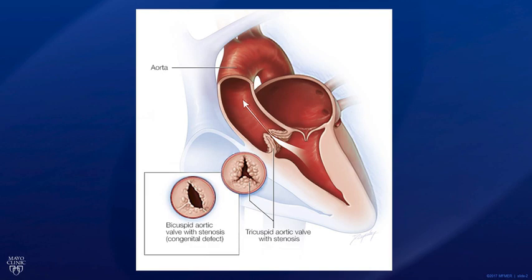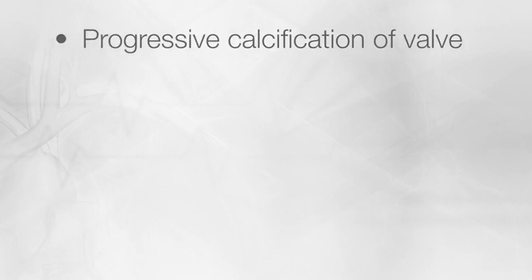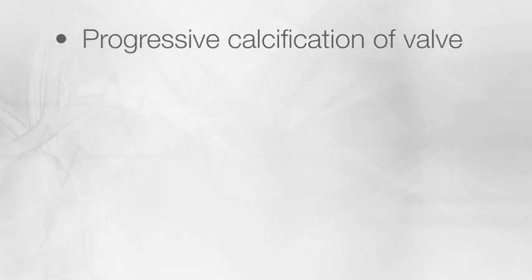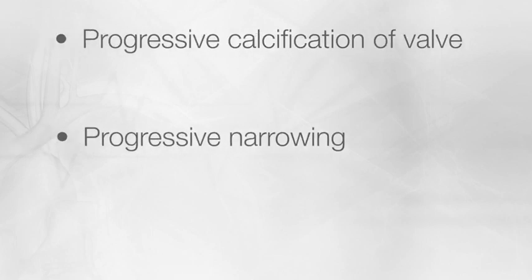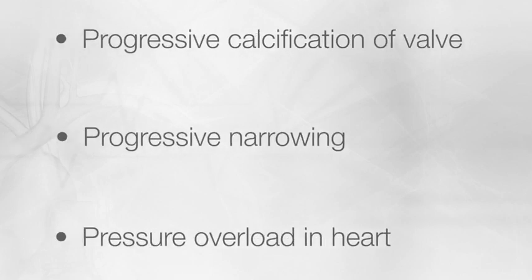Aortic stenosis is, in general, a progressive disease. Progressive calcification of the valve results in progressive narrowing and a pressure overload phenomenon in the heart. This can cause thickening of the heart muscle and stiffening.